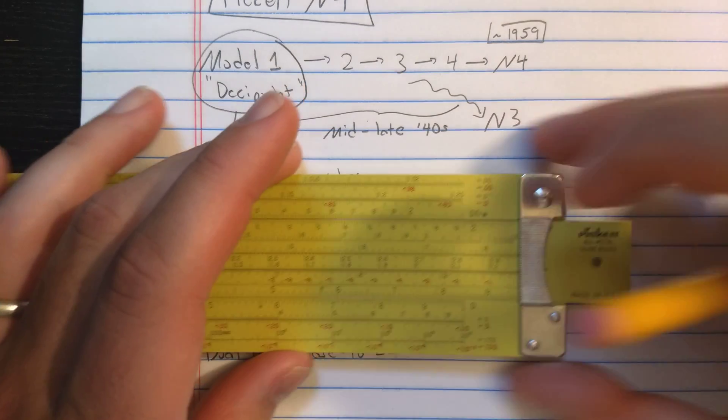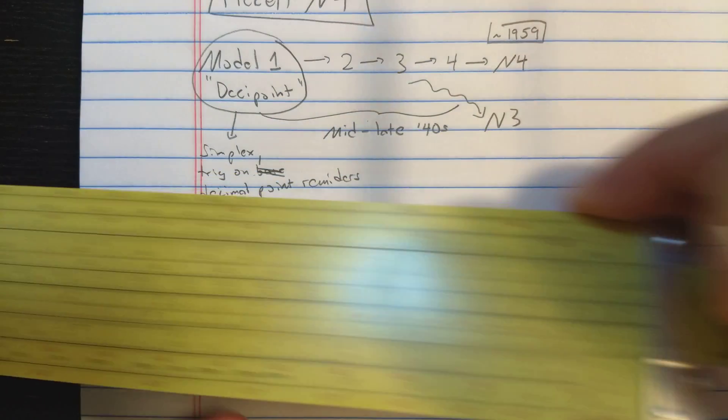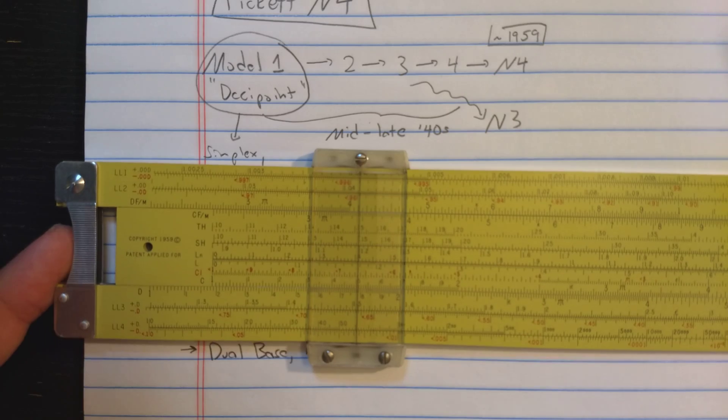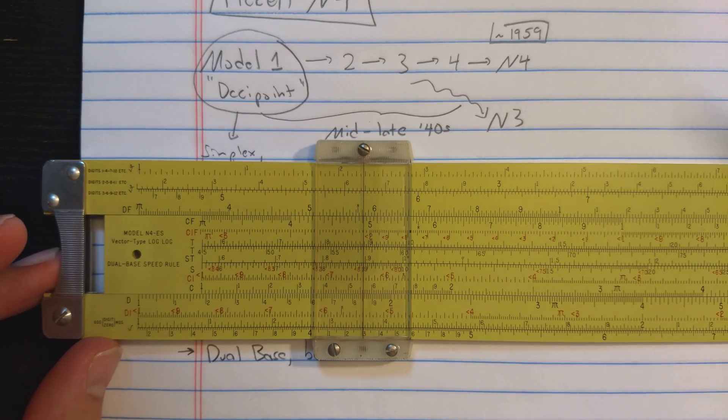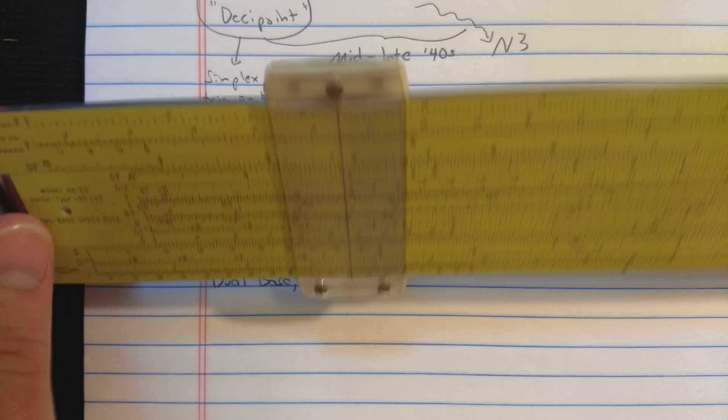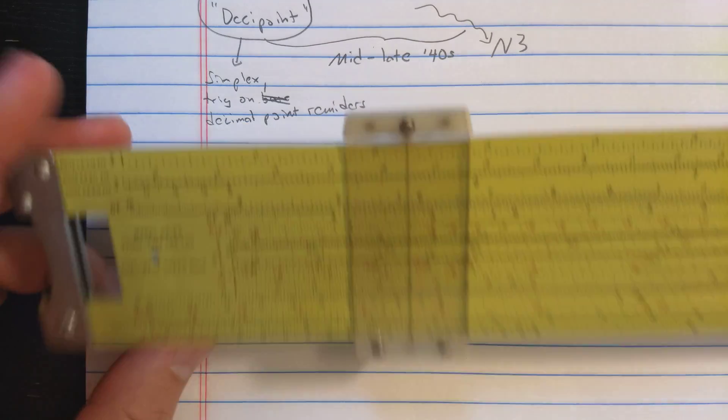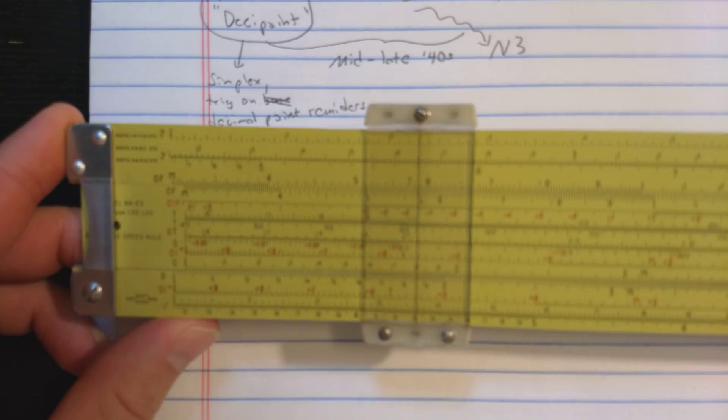This is a fairly late Model 1. It has a late Pickett label, late style cursor, but there are earlier N4s. But I think they all have the color printing. This is the eye saver yellow color, but it was also available in white. It has Pickett's traditional aluminum construction. Pickett starts out making magnesium slide rules, but later switches fairly early on to aluminum.